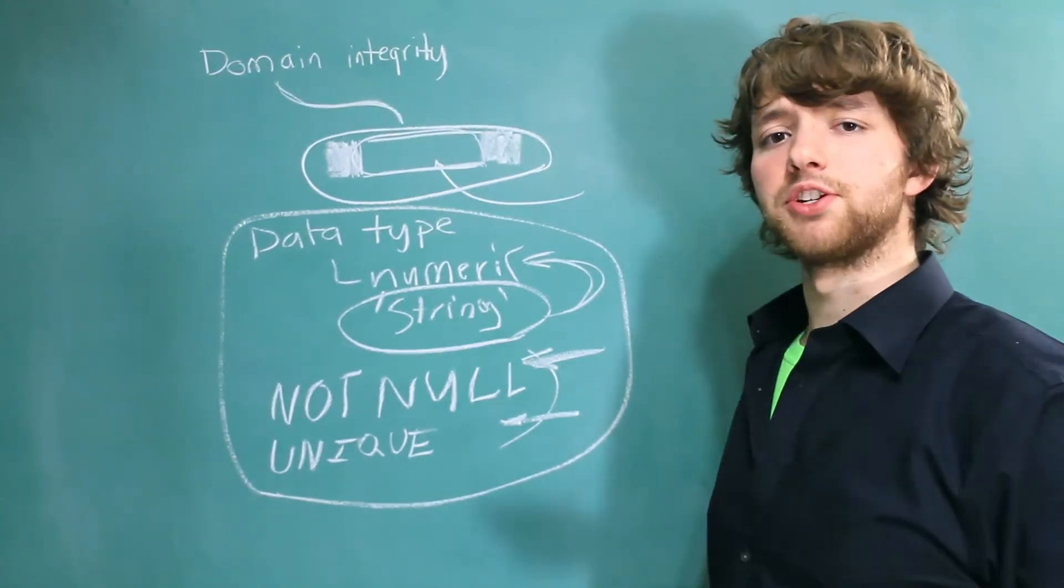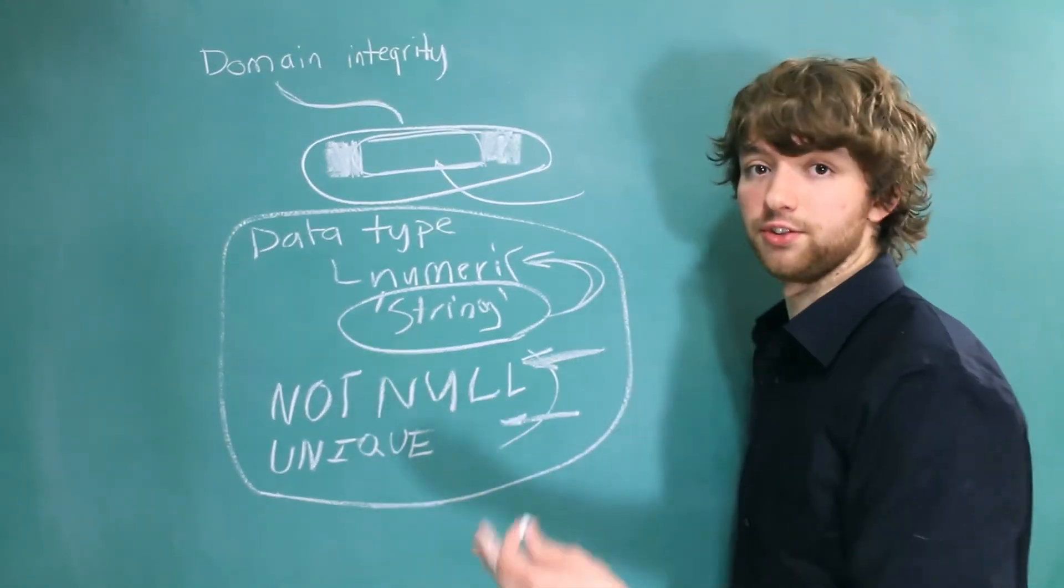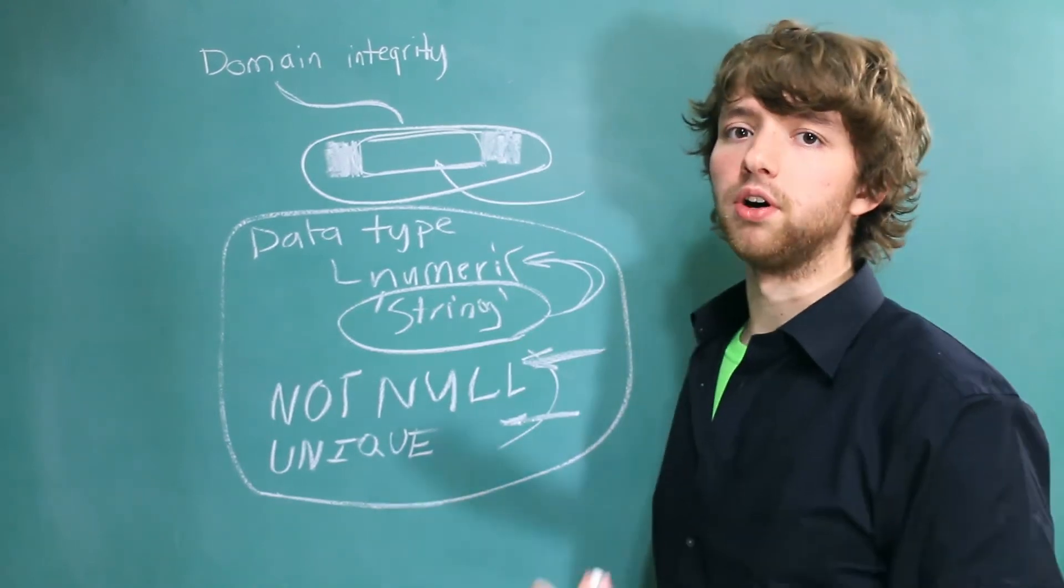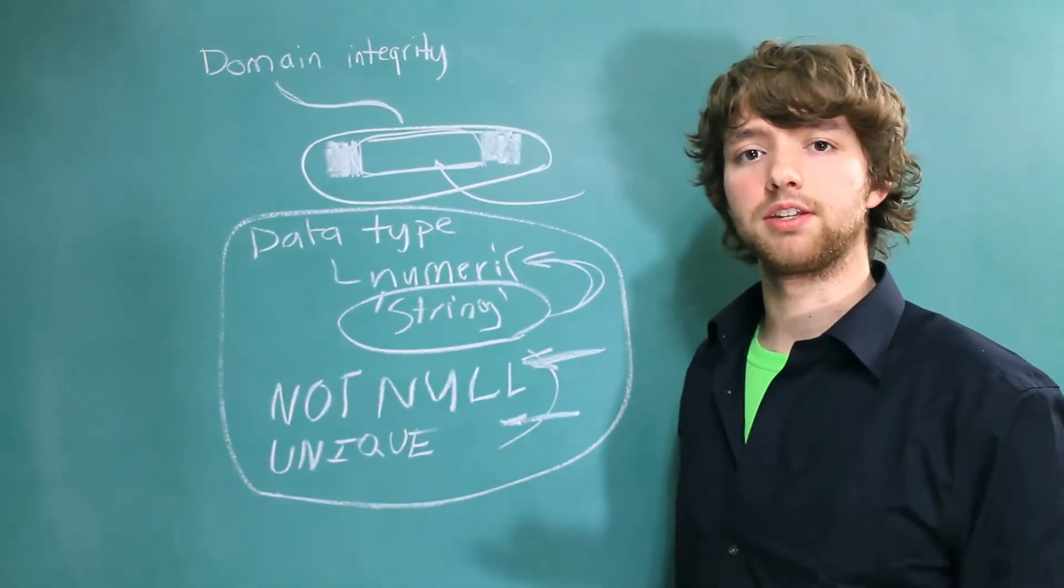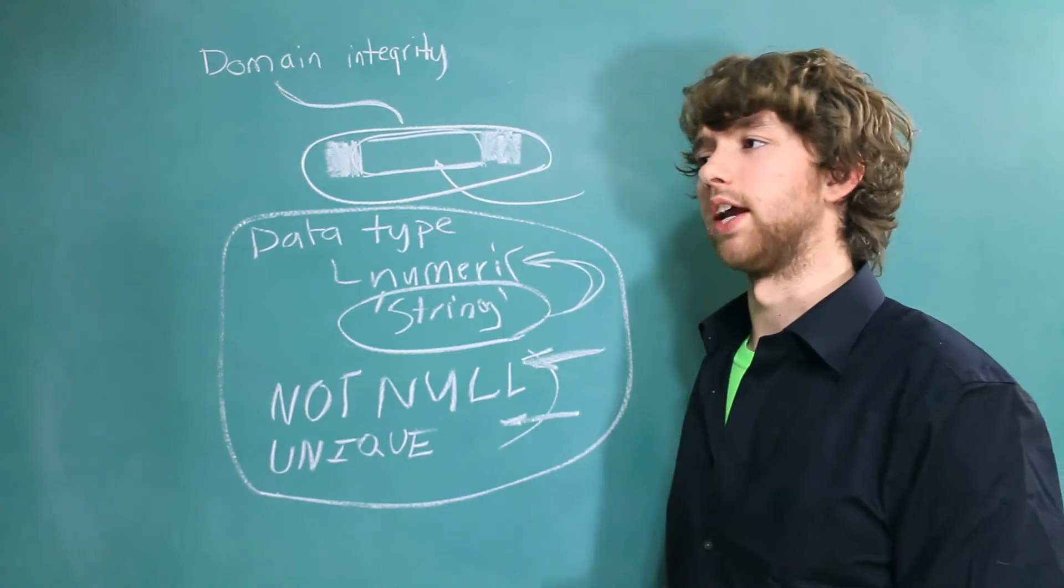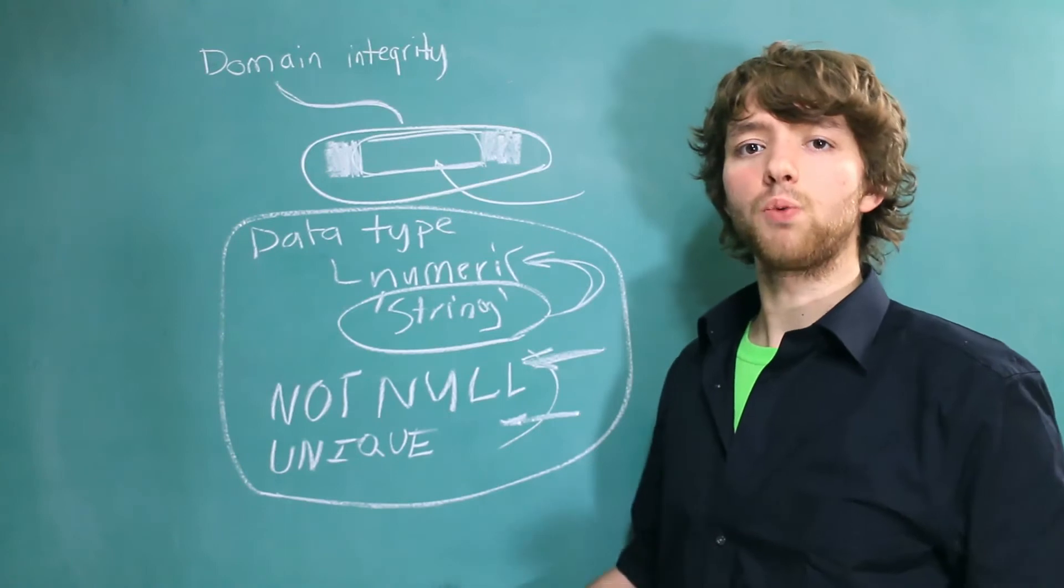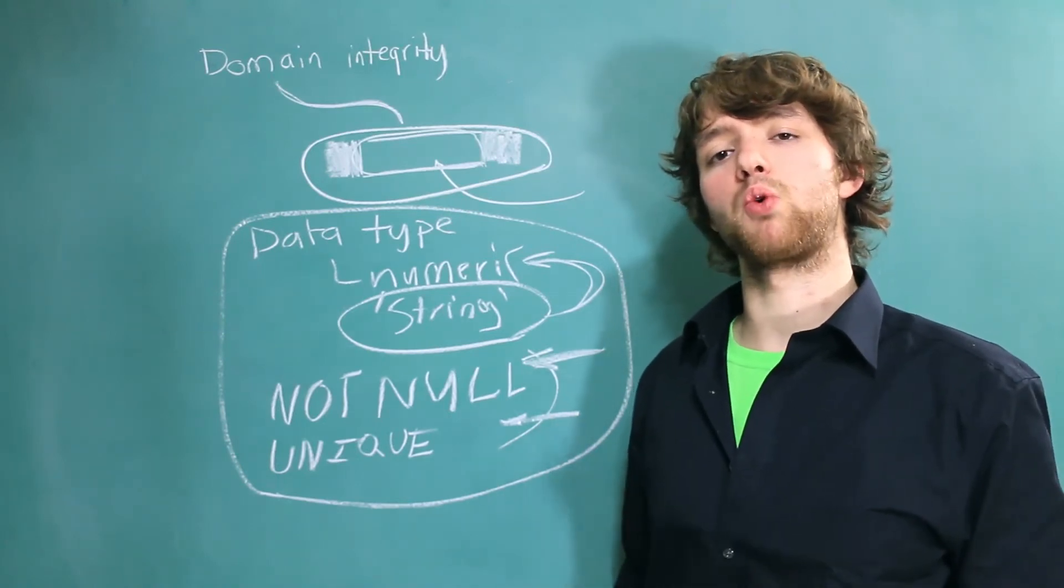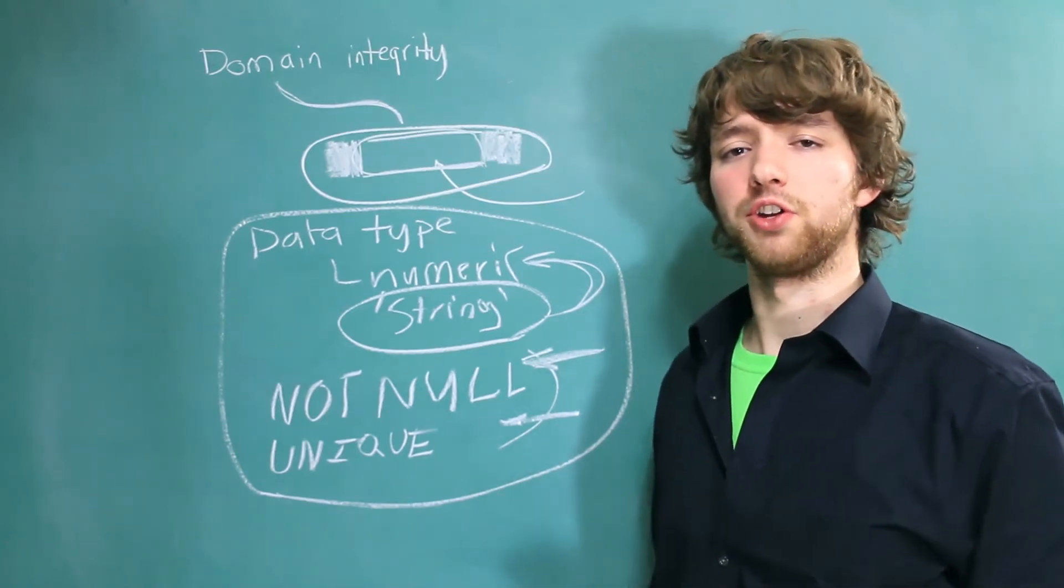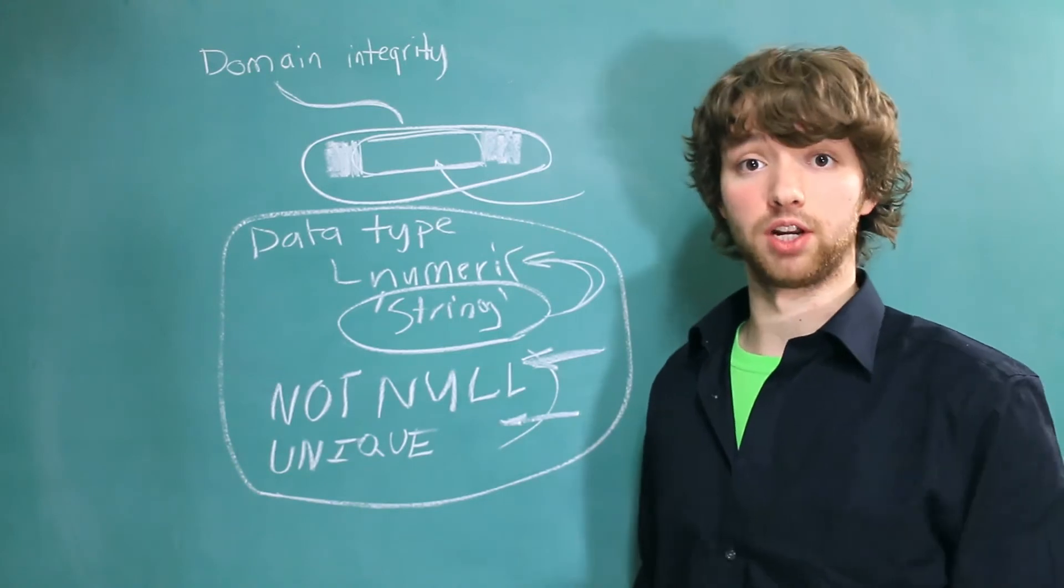Now some database management systems have what's known as a check constraint, and these things are pretty cool, but unfortunately MySQL does not have these. That's when you can say something like we want a value to be between 5 and 50, for example. There are ways to mimic this in MySQL, but that requires more advanced MySQL knowledge, so we're not going to dive into that right away.